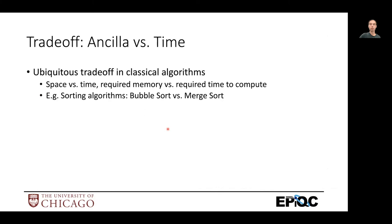So this gets into an interesting trade off we have, where the more Ancilla you have, the less time it takes to compute. And this is actually the same trade off we have in classical algorithms of space versus time complexity.